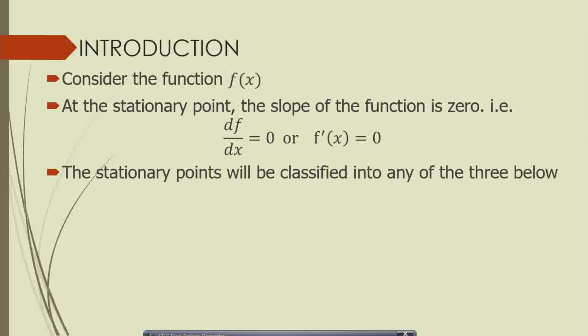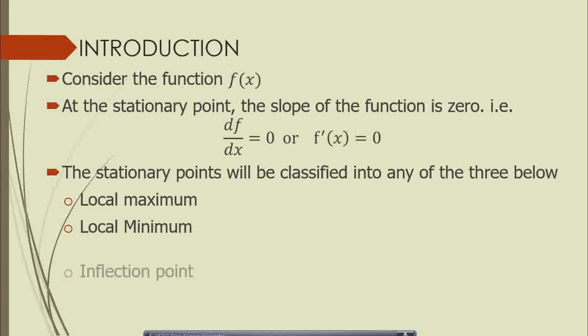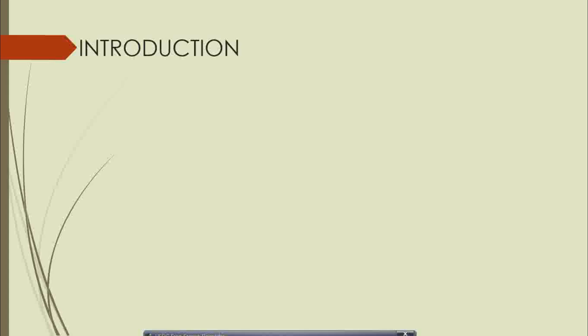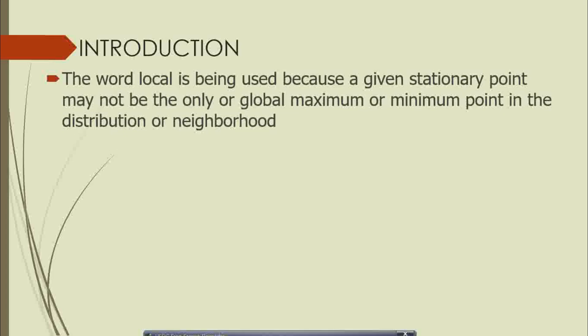The stationary points will be classified into one of three types: a local maximum, a local minimum, or an inflection point. We emphasize the word local because a given maximum or minimum point may not be the only minimum or maximum point in the distribution — there could be other points that also appear to be max or minimum.